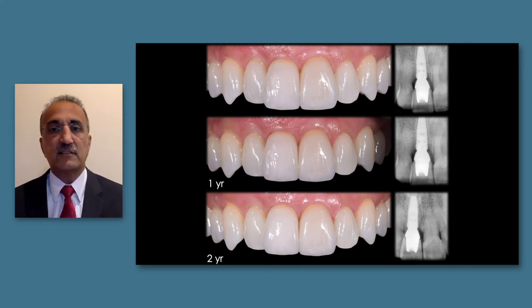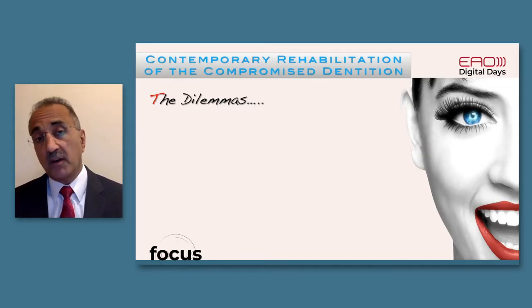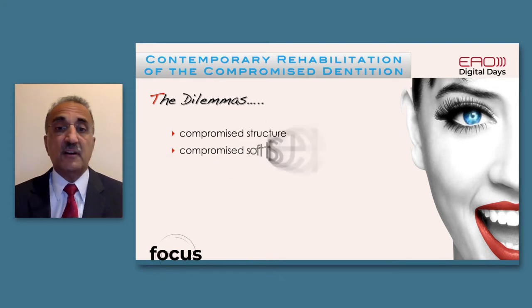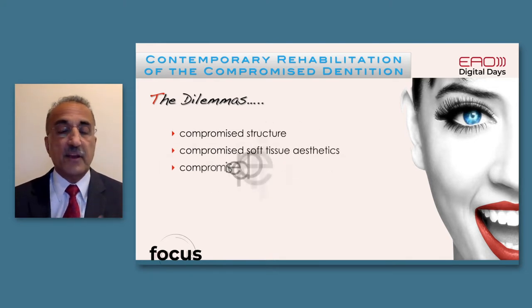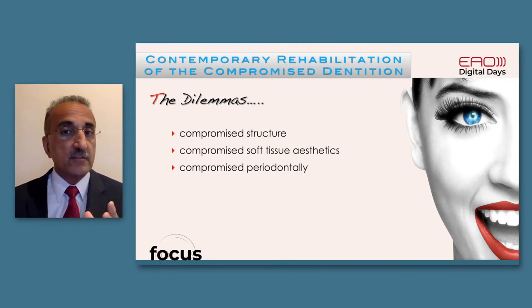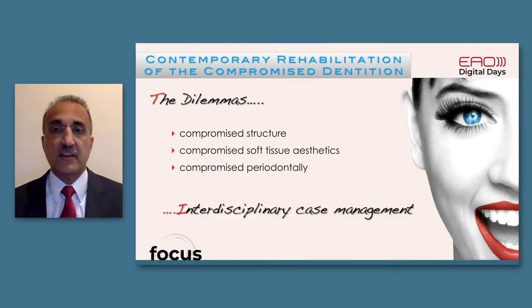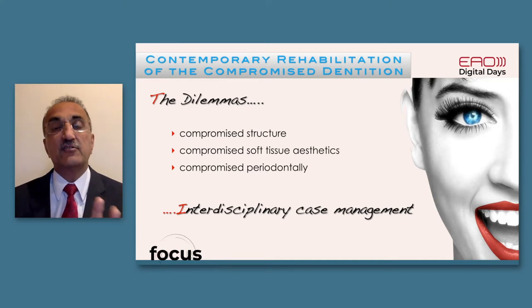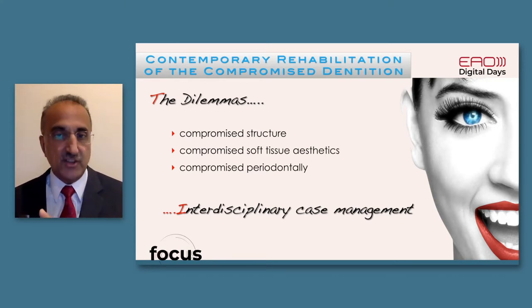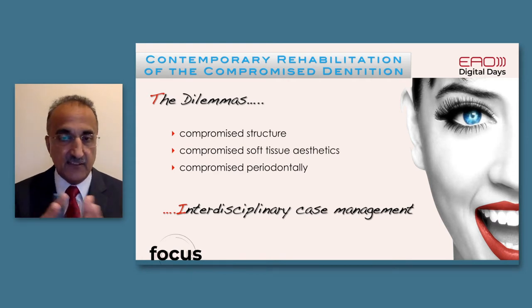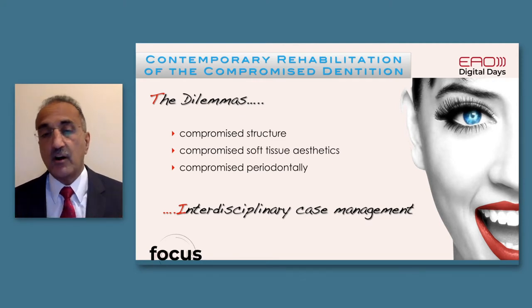This is a common outcome. In contemporary rehabilitations of compromised dentitions, the dilemmas we face are: number one, compromised structure; number two, compromised soft tissue aesthetics; and number three, periodontally compromised patients. To manage all these appropriately we have to think with an interdisciplinary hat on - what can dentistry do best for this patient, rather than just what my speciality favors. It's not just about implants; it's about encompassing everything in our armamentarium for the benefit of patients and long-term outcomes.